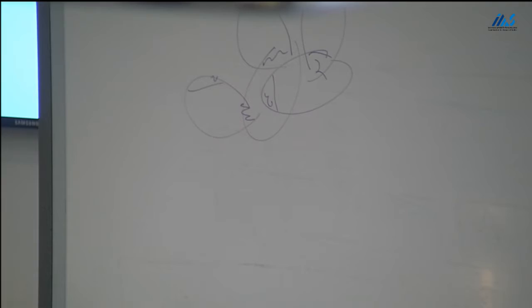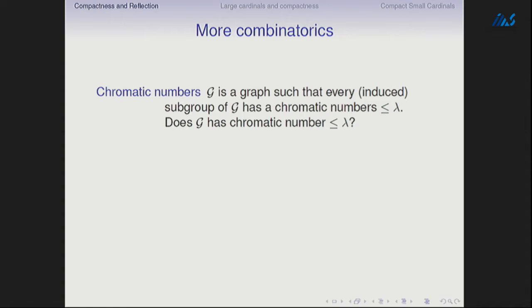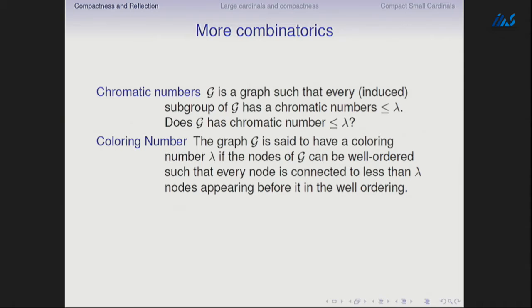Something that will play a major role in the tutorial after me by Petr Komjáth is chromatic numbers. G is a graph such that every subgraph of G has chromatic number bounded by λ — does that mean the whole graph has chromatic number bounded by λ? Related is the coloring number, which is a property of the graph that implies chromatic number less than or equal to λ: you can well-order the nodes so that every node is connected to fewer than λ nodes appearing before it in the well-ordering.